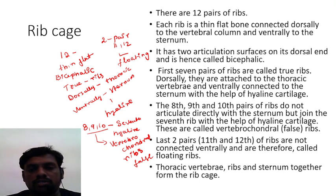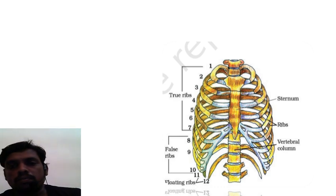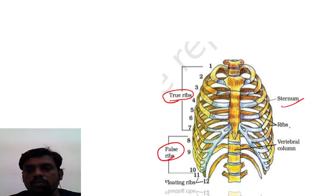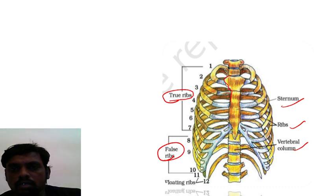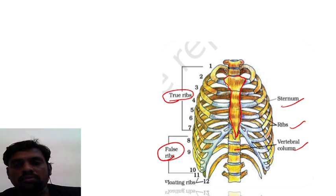The bones of the rib cage are the thoracic vertebrae, ribs, and sternum together. In the diagram of the rib cage, you can see the true rib bones, false rib bones, sternum, and vertebral bones. Ventrally, the ribs are connected to the dagger-like bone called the sternum; dorsally, they are connected to the vertebral bone — hence they are bicephalic rib bones.